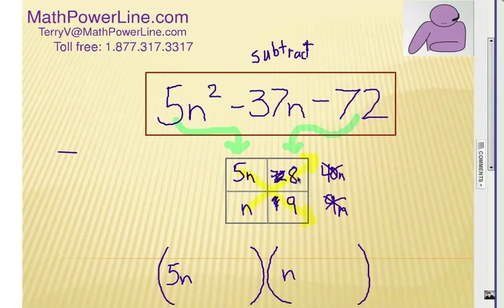Now, we're going to go diagonally. So, now it's going to be 5n times 9 which is 45n and n times 8 which is 8n. Again, I have to subtract. So, 45n take away 8n. Ah, that gives me 37n. Now, I have to figure out my signs here. Which of these, the 8 or the 9, has to be negative? Well, it would have to be the 9 because I want 5n times negative 9 to be negative 45. With a positive 8n and that would work.